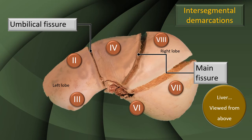That way, we have a clear idea of three venous channels joining the inferior vena cava: the right hepatic, the middle hepatic, and the left hepatic veins.